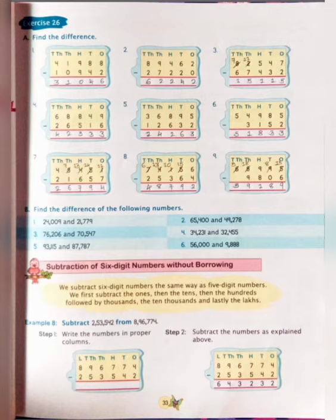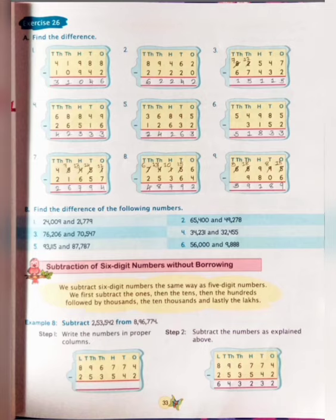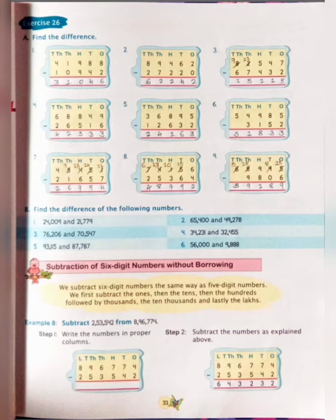Now number 2: 89,462 minus 27,220. Let's count the 1's place: 2 minus 0 is equal to 2. 6 minus 2 is equal to 4. 4 minus 2 is equal to 2. 9 minus 7 is equal to 2. 8 minus 2 is equal to 6. So finally, our answer is 62,242.